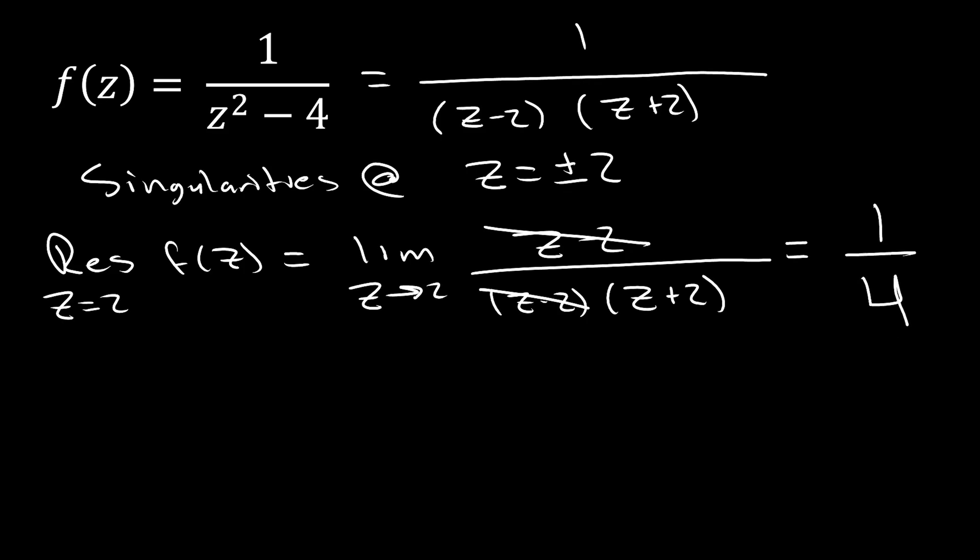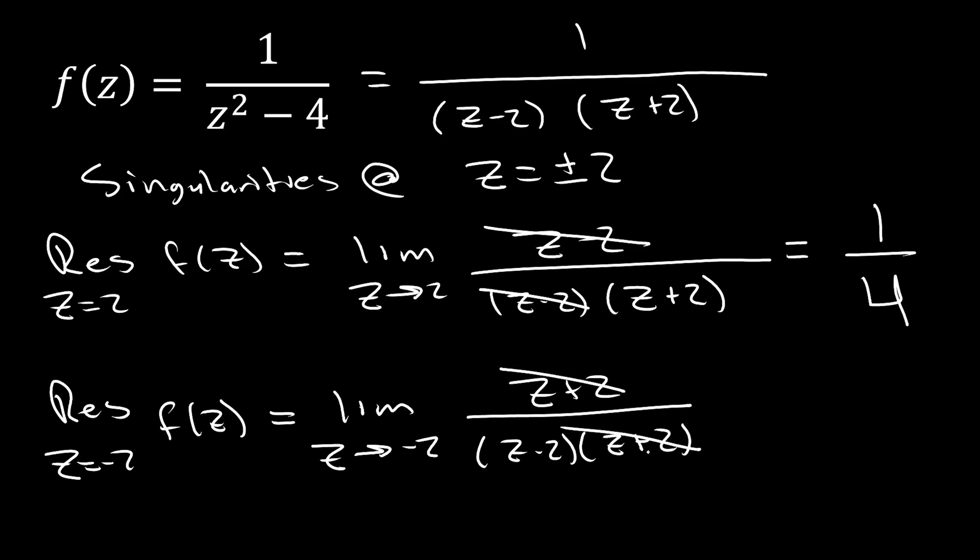Let's do the same thing now for the other singularity at z equals minus two. Again, we still just have a pole of order one. So, we're just going to take z minus z naught. In this case, z naught is negative two. So, we're going to get the limit as z tends to negative two of z plus two on z minus two, z plus two. And now, the other terms are going to cancel. So, our z plus two terms are going to cancel. And we're going to be left with a negative one-fourth.